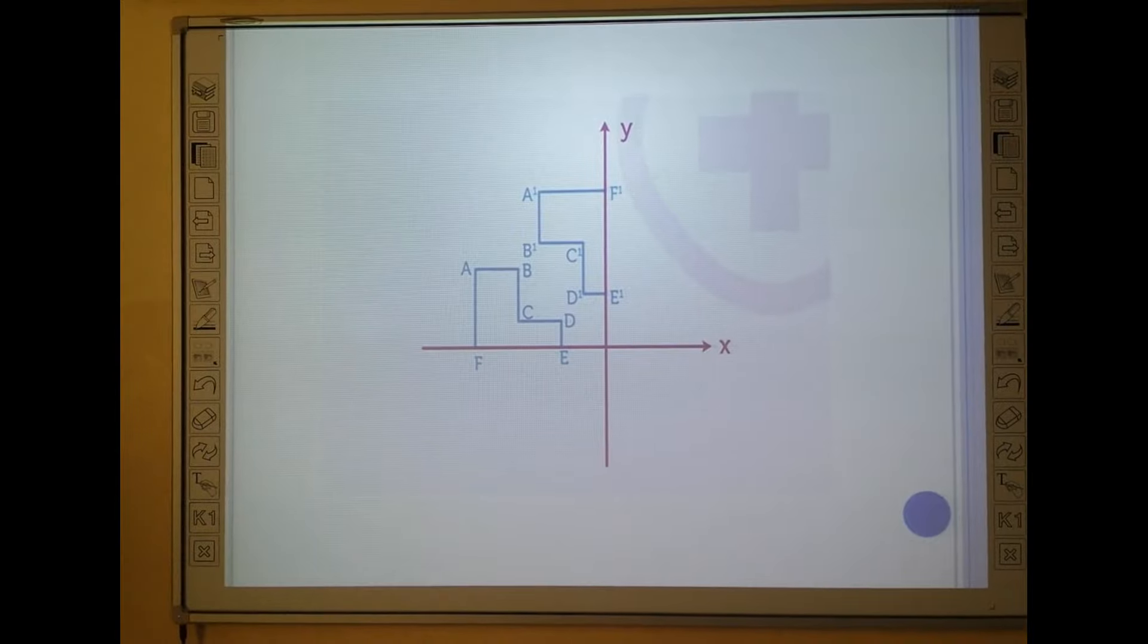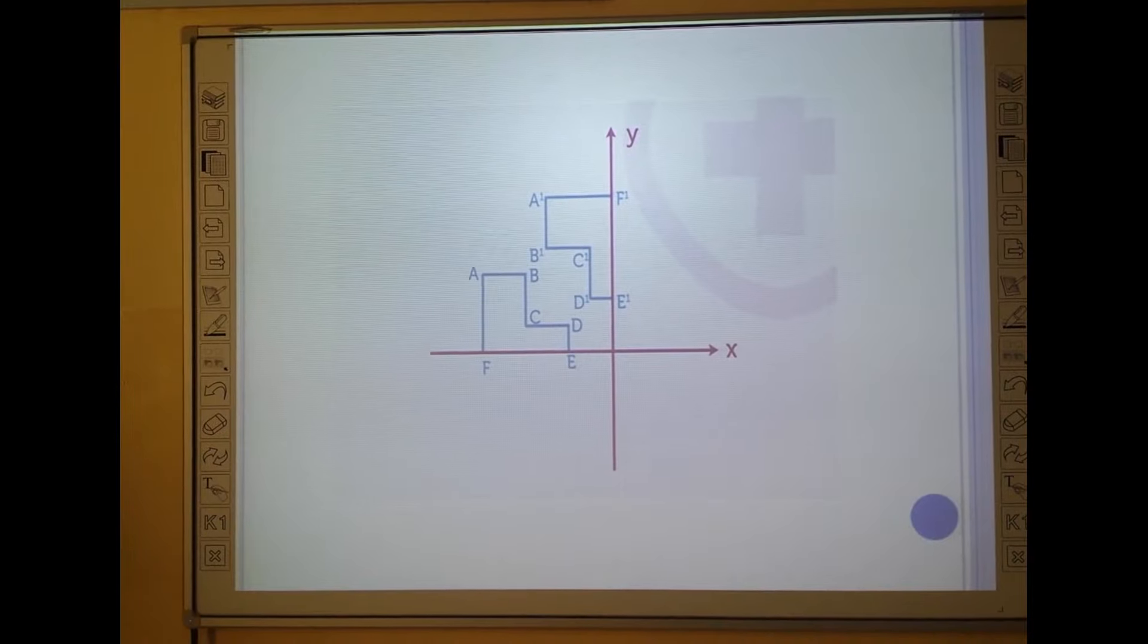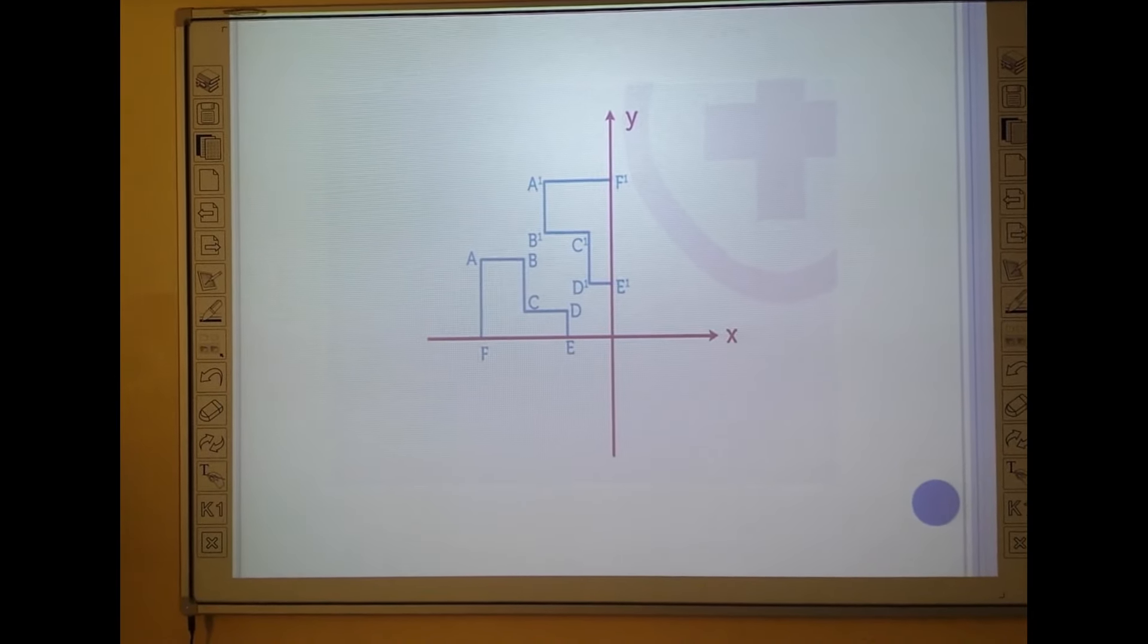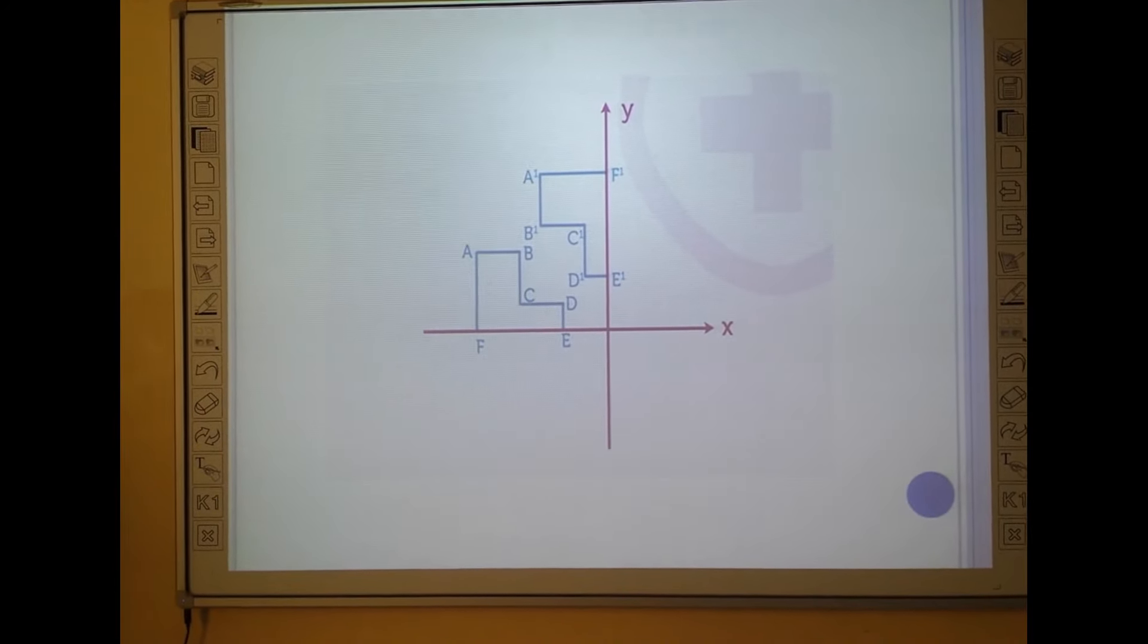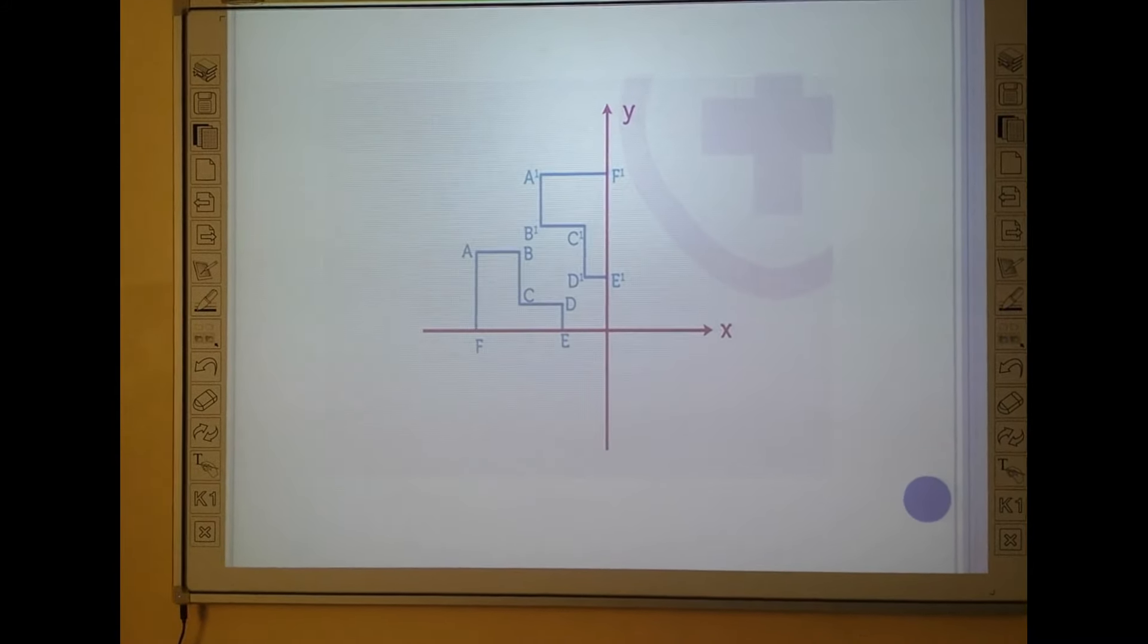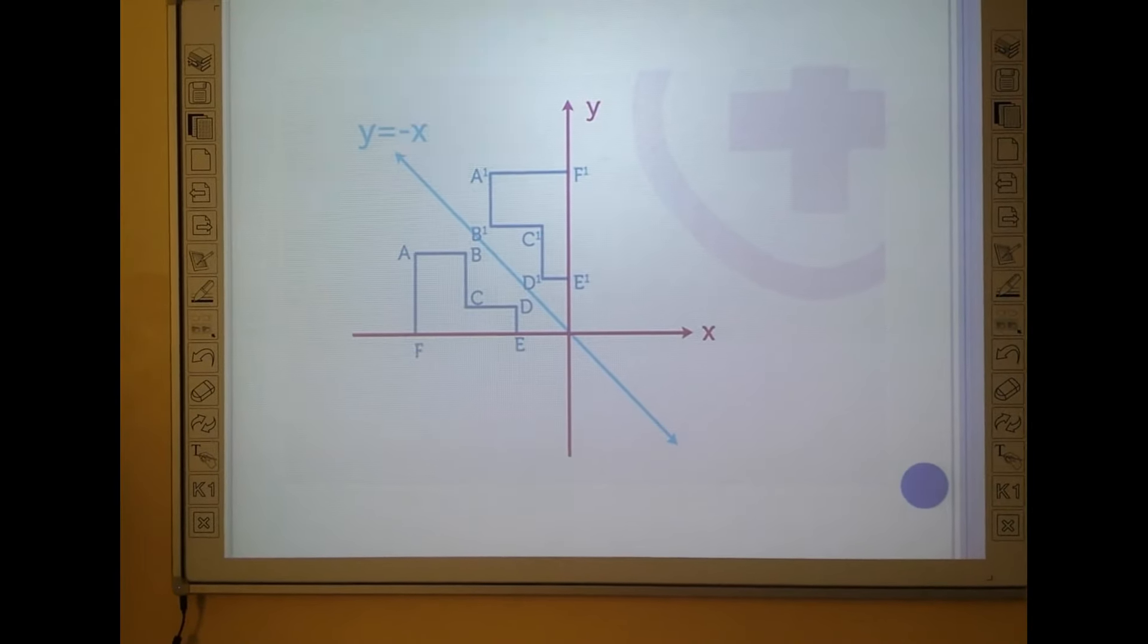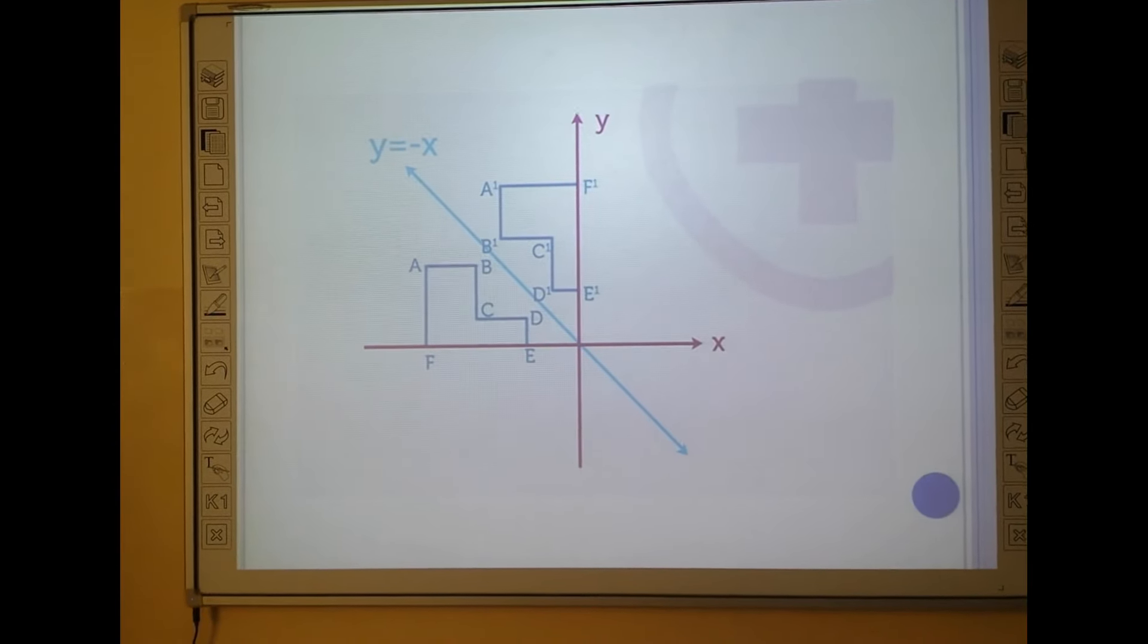Another figure, the ABCDEF is the object and it is reflected on A1, B1, C1, D1, E1, F1 image. Here, the line Y equals minus 6 is a line of reflection. This is the line. You can easily observe if object and image are available, so Y equals minus 6 is the line.